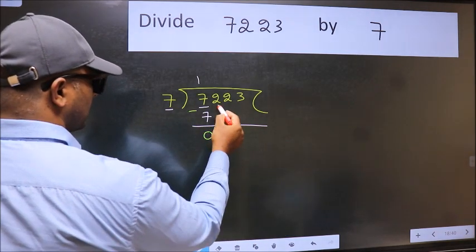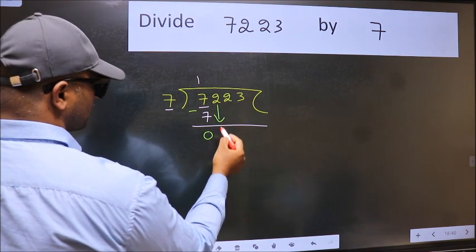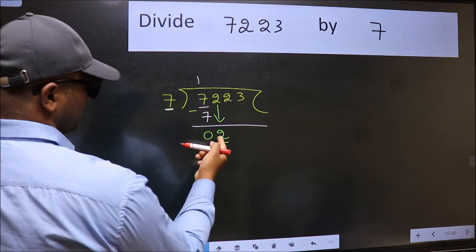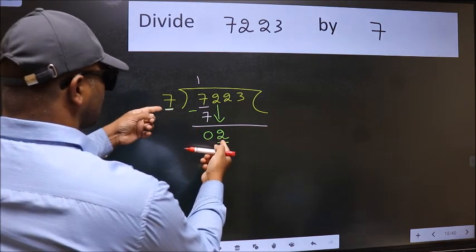After this, bring down the beside number. So 2 down. Now here we have 2 and here 7. 2 is smaller than 7.